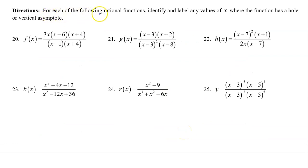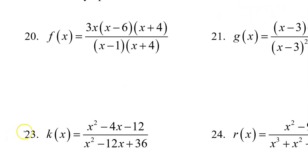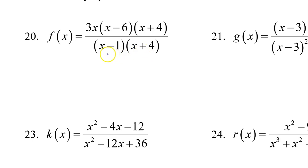For each of the following rational functions, identify and label any values of x where the function has a hole or a vertical asymptote. Holes and vertical asymptotes both come from factors in the denominator. If the factor cancels out completely, it leads to a hole. If the factor remains, it gives you a vertical asymptote.